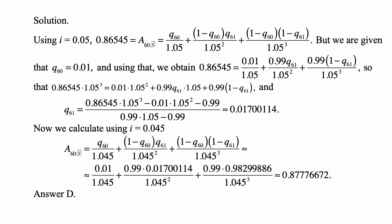But we are given that Q60 is 0.01, and using that we obtain 0.86545 equals 0.01 over 1.05 plus 0.99, which is 1 minus 0.01, times Q61 over 1.05 squared plus 0.99 times (1 minus Q61) over 1.05 cubed.